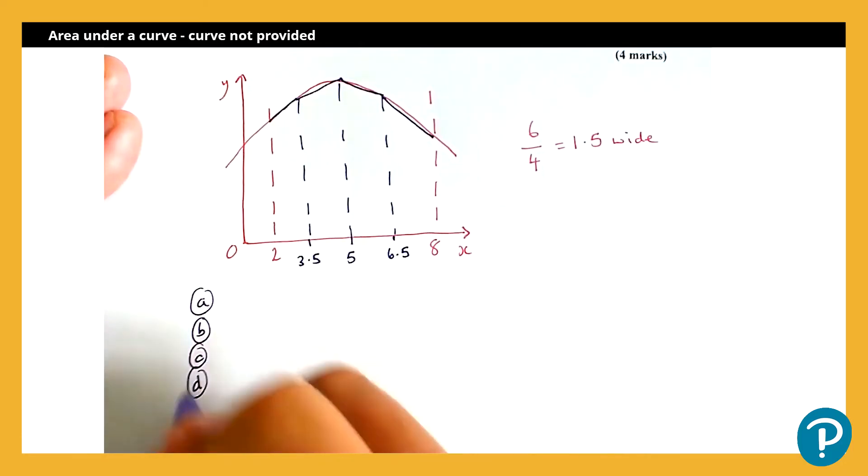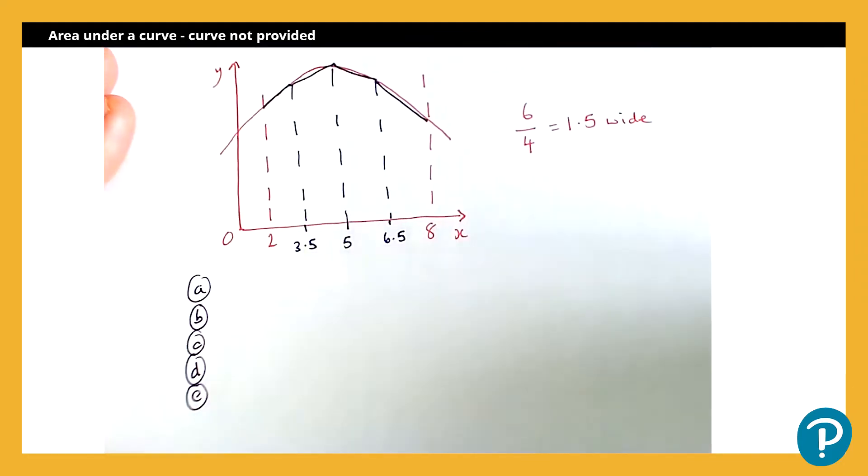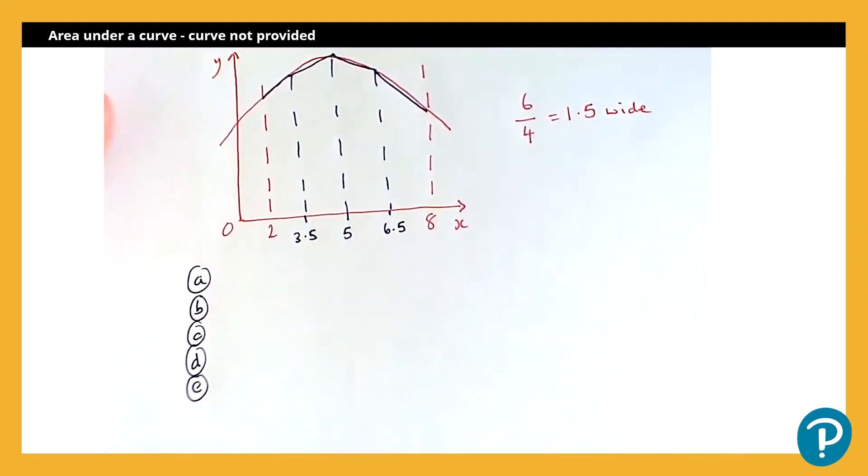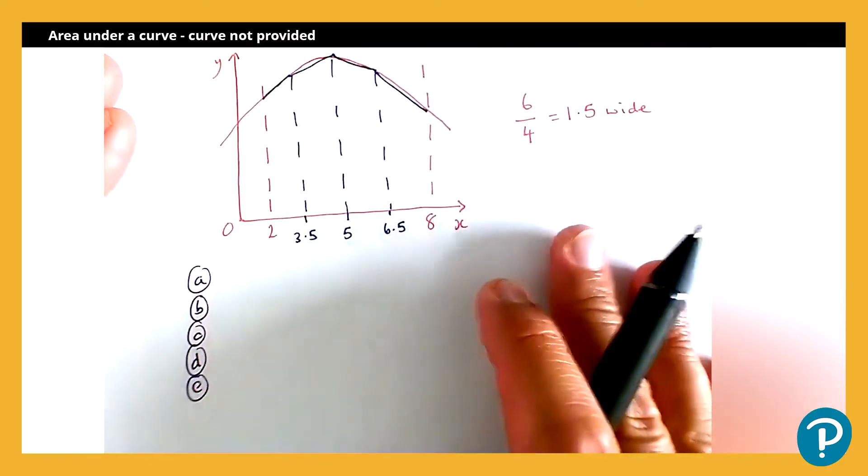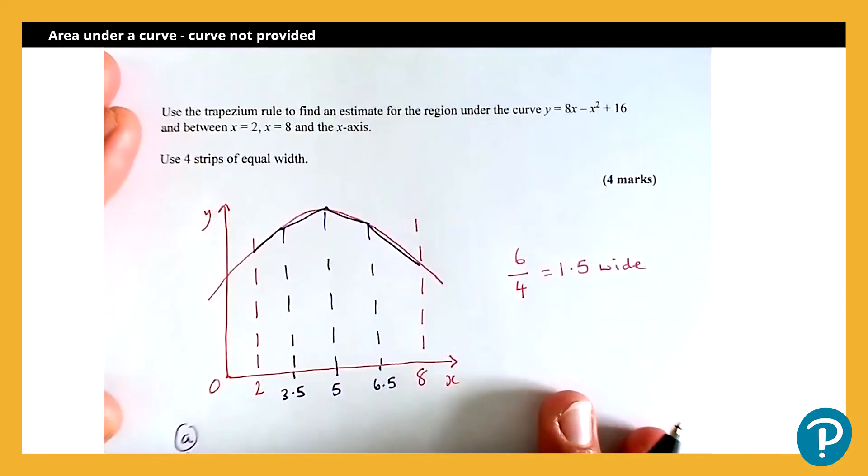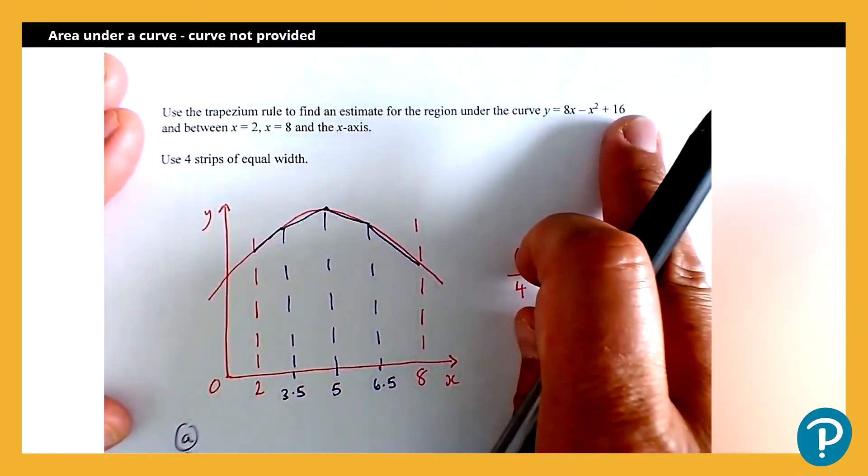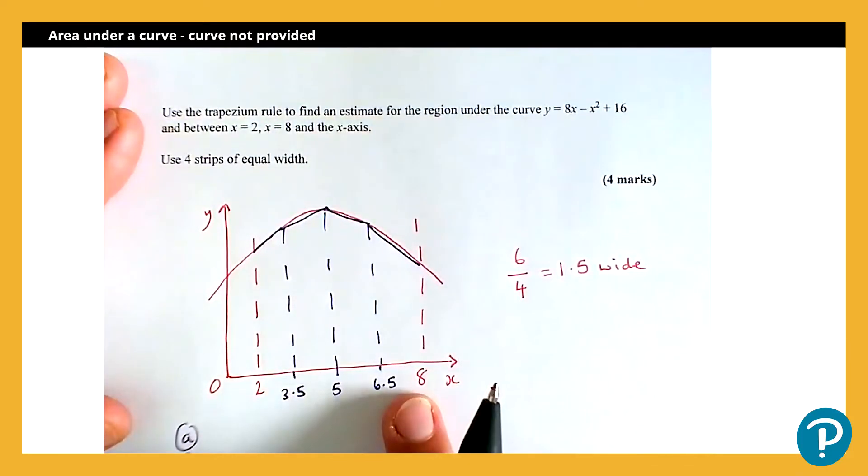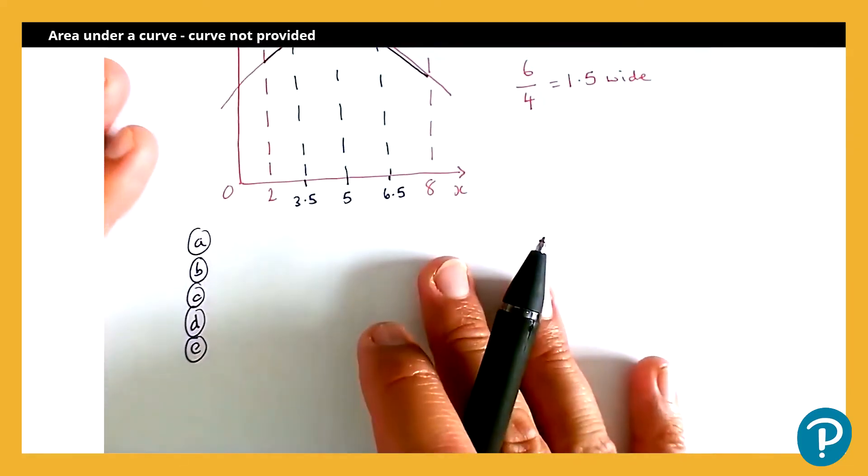And rather than generating these values by reading off from the graph, this time we're going to get these values by using substitution. We're going to substitute each x value into the function we've been given. If I just slide my paper up, you can see the function is given here, y equals 8x minus x squared plus 16. So I'm going to substitute these into that function and generate my values that I'm then going to use in the trapezium rule.